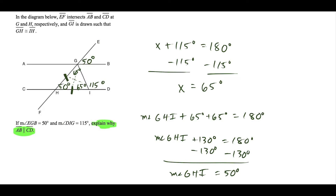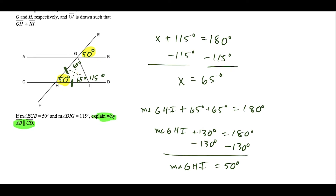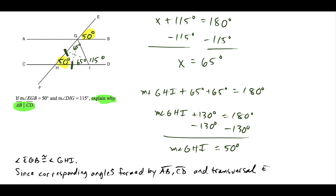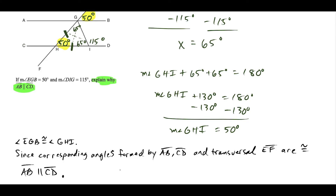Notice that angles EGB and GHI are corresponding angles — both equal 50 degrees. By the theorem that states if corresponding angles formed by two lines and a transversal are congruent then the two lines are parallel, we conclude that AB is parallel to CD.